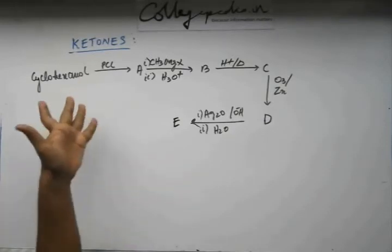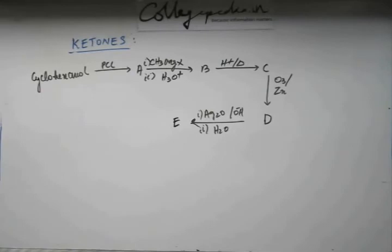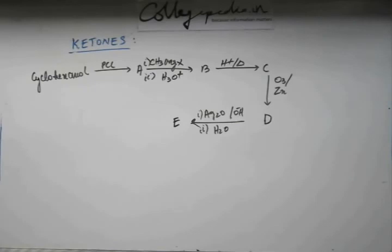PCC stands for Pyridinium Chlorochromate and is an important reagent. I have told you that PCC is going to appear in conversion problems from this chapter on carbonyl compounds. We studied this reagent in great depth during the method of preparation of ketones, so identifying A should not be difficult for you.